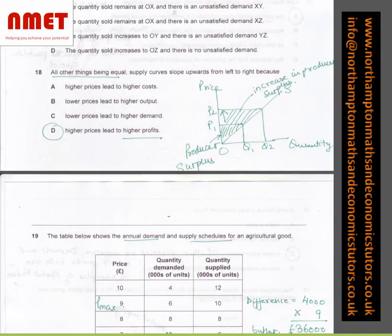In question number 18, all other things being equal, supply curve slopes upwards from left to right because higher price leads to higher profits, hence producers are willing to supply more. I have explained this by the diagram where I have said, this is the producer surplus. With a higher price, there is more supply, and we can see there is an increase in producer surplus.